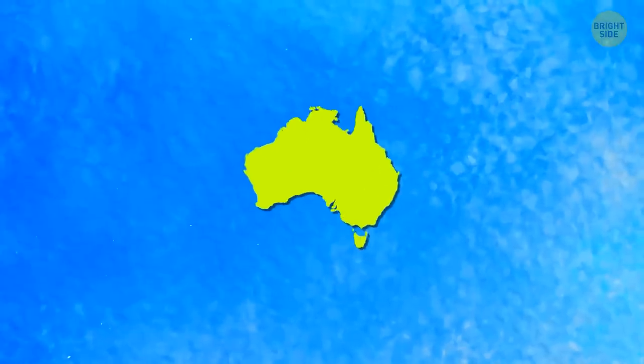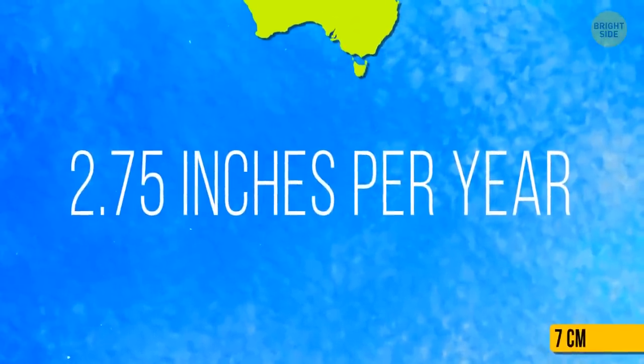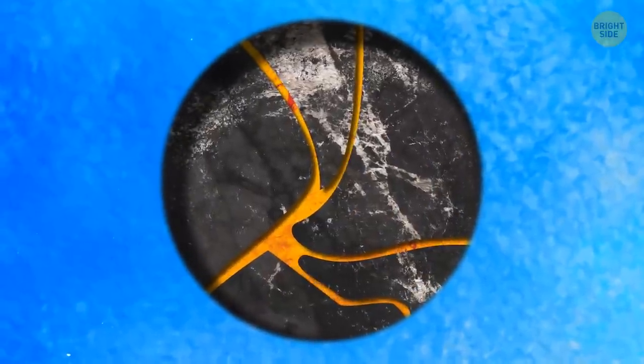Australia is slowly shifting north, 2.75 inches per year, because of tectonic movements. Australia is one of the top continental tectonic plates that move faster than others.